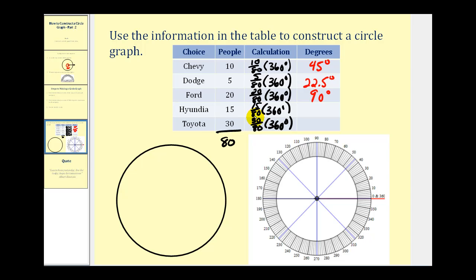And then 15 out of 80 would be the same as combining these two categories. So if we add these two angles, that would represent 15 eightieths of 360 degrees. That's 67.5 degrees.